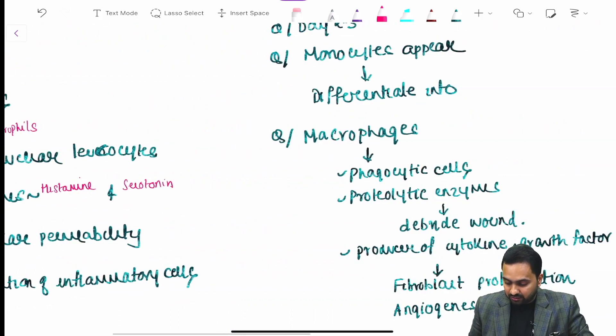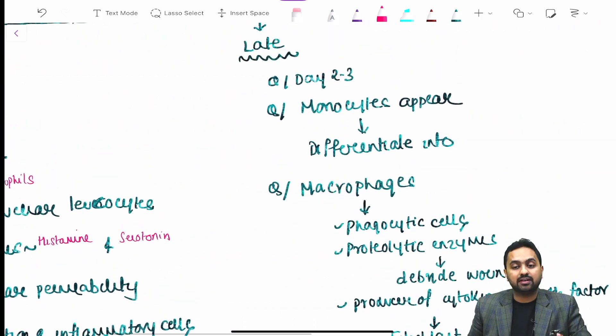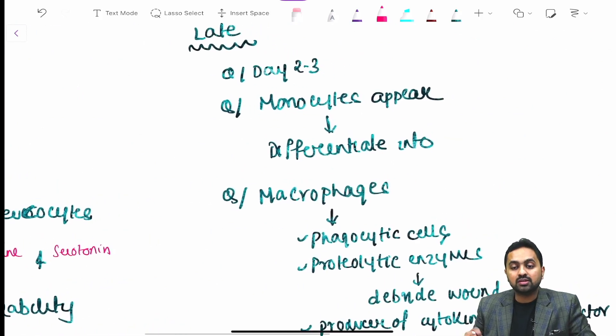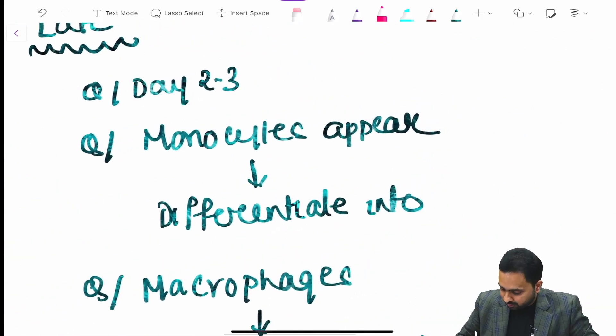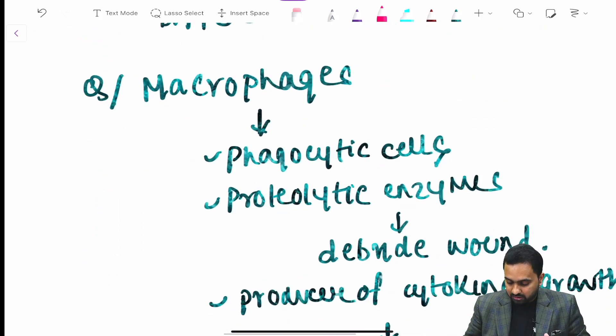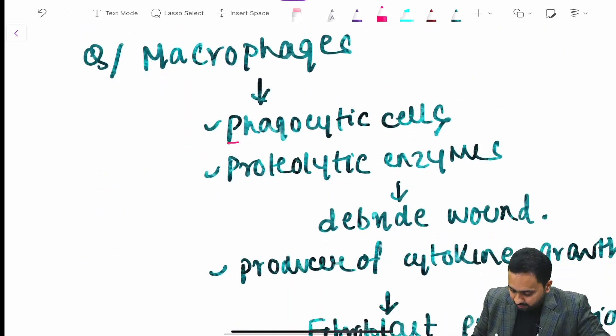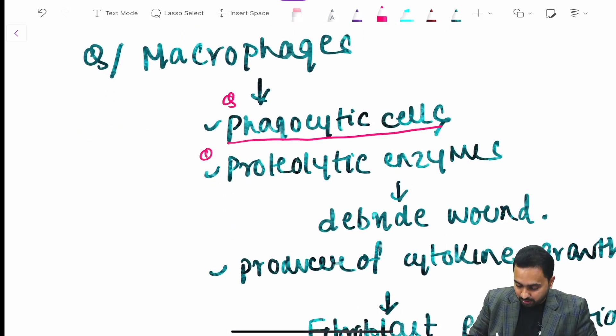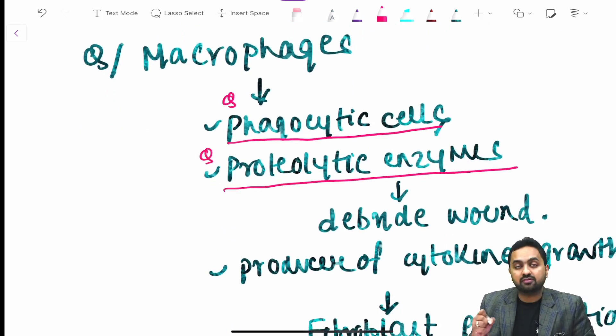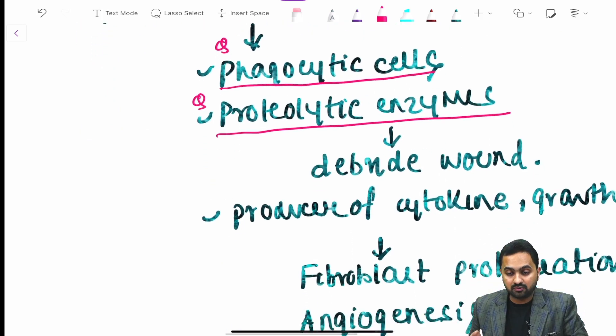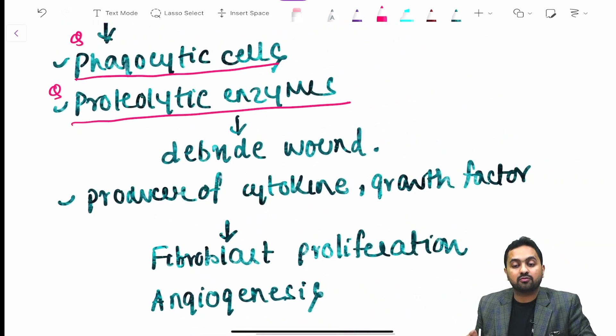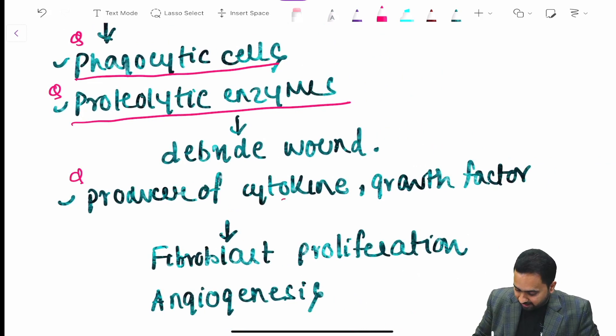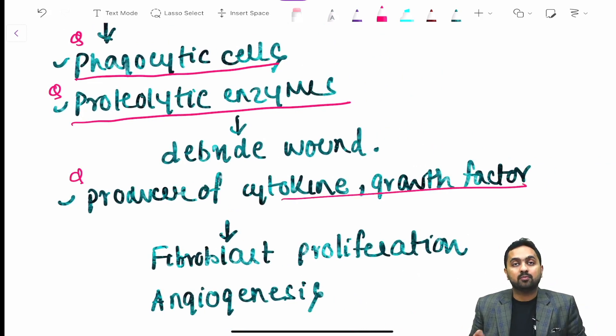In your late inflammation phase which occurs during day two or day three, monocytes appear which differentiate into your macrophages. This macrophage plays a very vital role which acts as your phagocytic cells. It also helps in the proteolytic enzyme synthesis which causes the debridement of the wound and it is also the producer of your cytokine and your growth factor which causes fibroblast proliferation and angiogenesis.